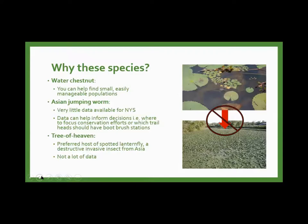For Asian jumping worms, there's not a lot of data available in New York State. It is here — we just don't know to what extent. Knowing where populations are can inform decisions: where we should be putting boot brush stations at trail heads, where we should be focusing our conservation efforts. That's really valuable for planning ahead.